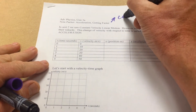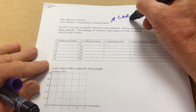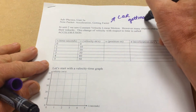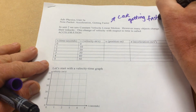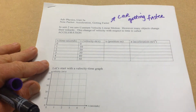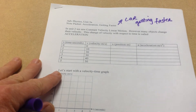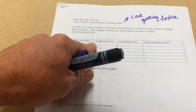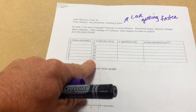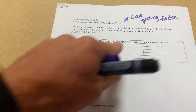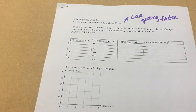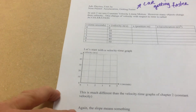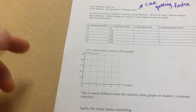Objects that get faster — this could be a car with your foot on the gas. What I've got is a data table with time from zero through five, velocity in meters per second, and blank columns for position and acceleration. Let's start with a velocity-time graph, or VT graph.